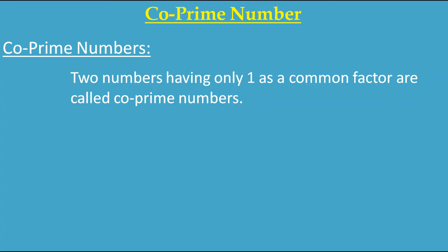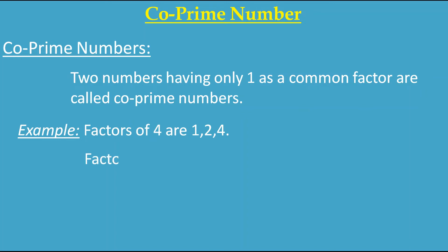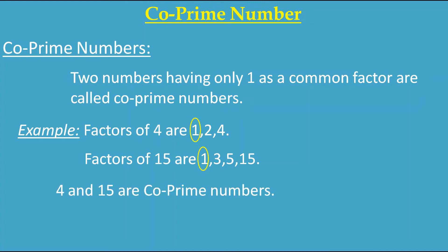For example, the factors of 4 are 1, 2, 4 and the factors of 15 are 1, 3, 5, and 15. Now if you look carefully you will understand that there is no common factor between them — just 1 is there. So these two numbers, 4 and 15, are co-prime numbers.